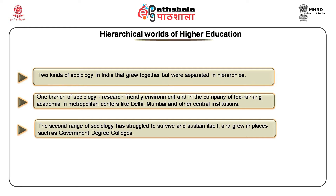Singh argues that within India, in the higher education scenario, there are many worlds placed within hierarchical structures. One of these structures refers to metropolitan versus the mufasil, based on regional disparities with regard to quality and access to education. Singh argues that if one analyzes the development of sociology in India, there are two kinds of sociology that grew together but were separate in hierarchies. One branch has prospered in the proximity of a research-friendly environment in metropolitan centers like Delhi, Mumbai and other central institutions. The second range of sociology has struggled to survive and sustain itself, growing in places such as government degree colleges.